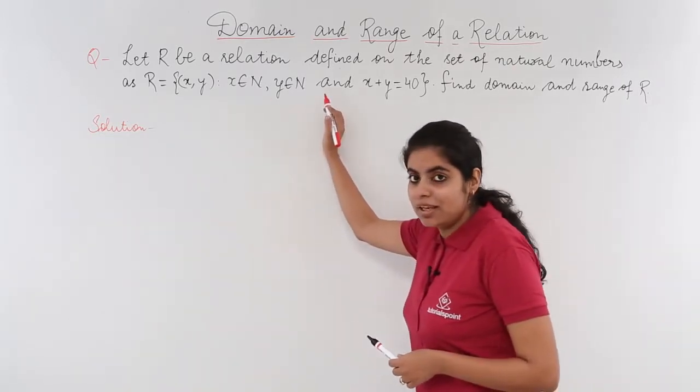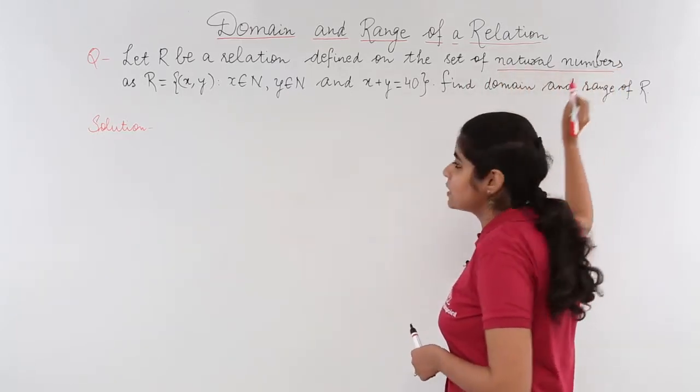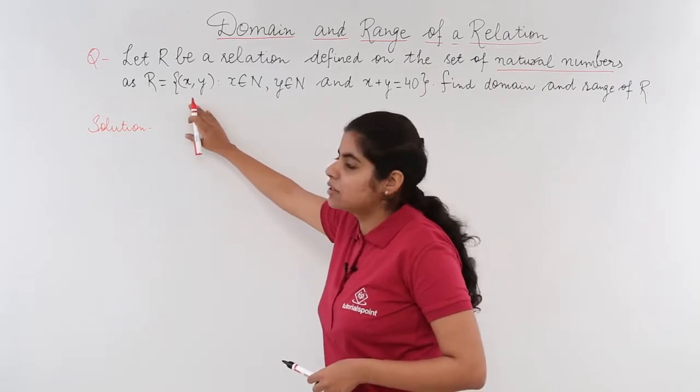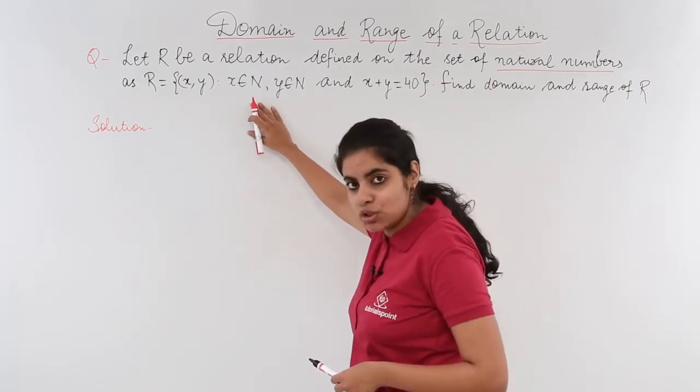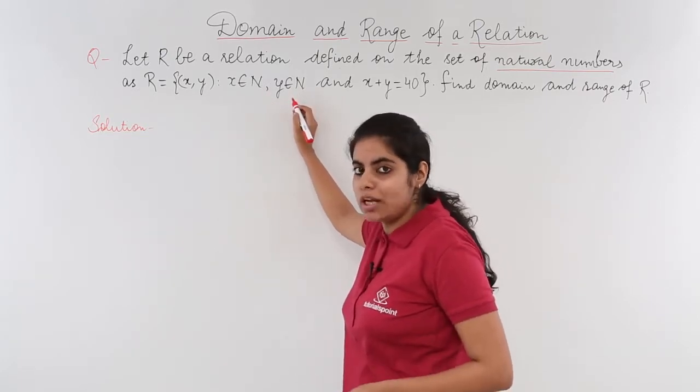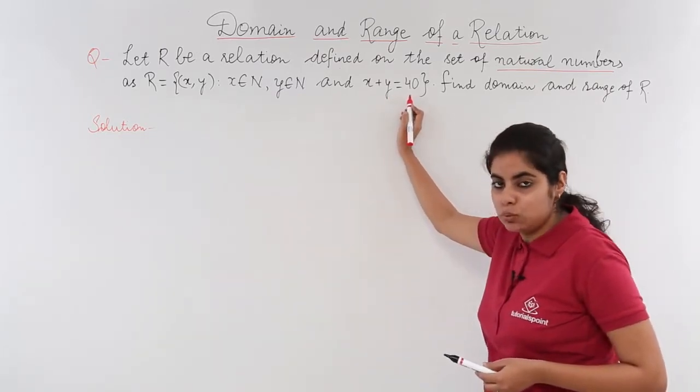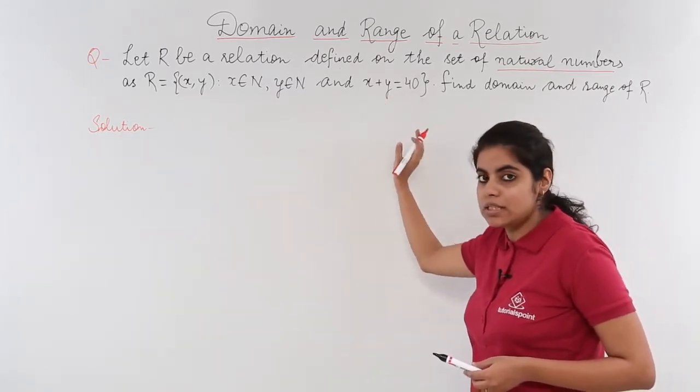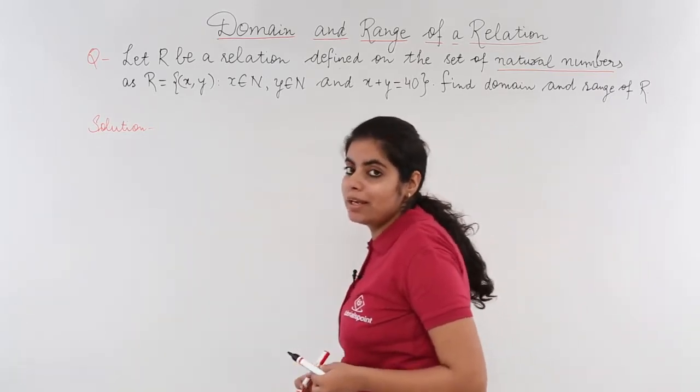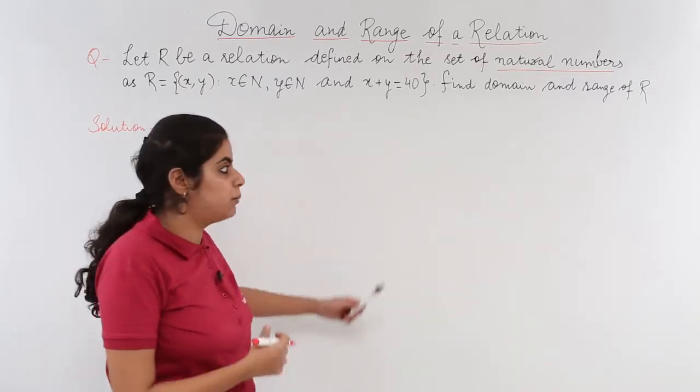Let R be the relation defined on the set of natural numbers. I'll underline natural numbers because it is important for the question solving purpose. And it is defined as R={(x,y) : x∈N, y∈N} and we have x+y=40. This is important for the sake of solving. I need to find the domain and range of a relation.